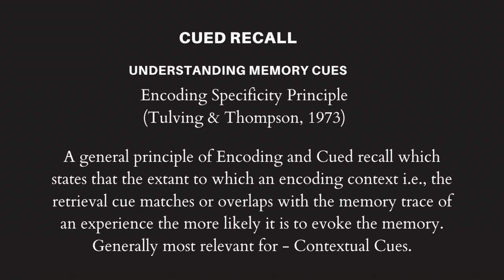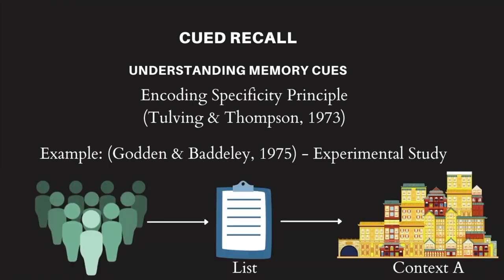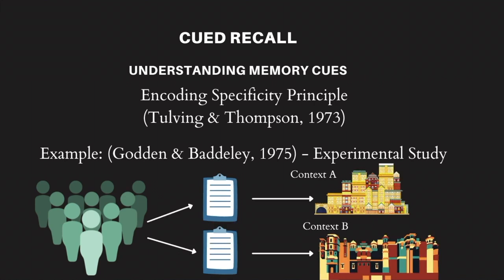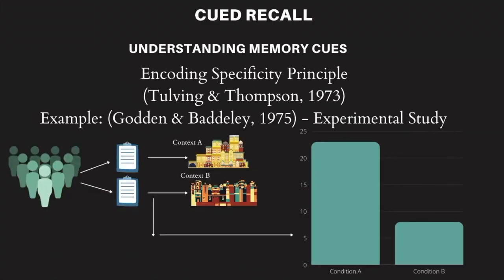A classic experiment on the encoding specificity principle was undertaken by researchers Gordon and Baddeley in 1975. Participants had to memorize a set of words in a unique setting — let's call it context A. Later, the participants were tested on the word sets either in the same location, context A, where they learned the words, or a different location, context B. The results indicated that, as a function of the encoding specificity principle, students taking the test in context A were able to recall more words than students who took the test in context B. In this instance, the physical context itself proved to be working as a cue for retrieval.